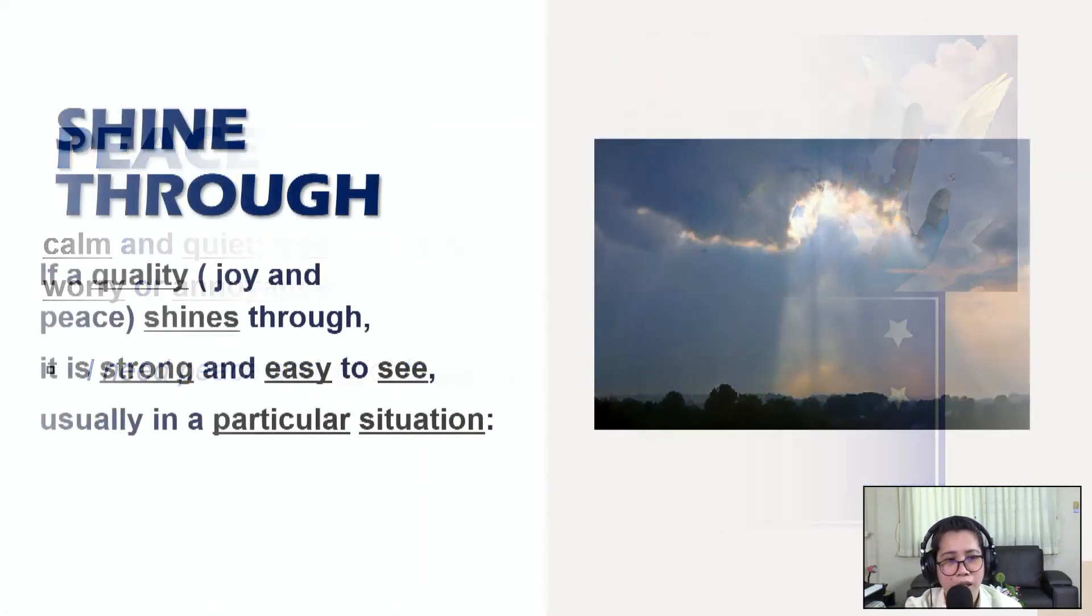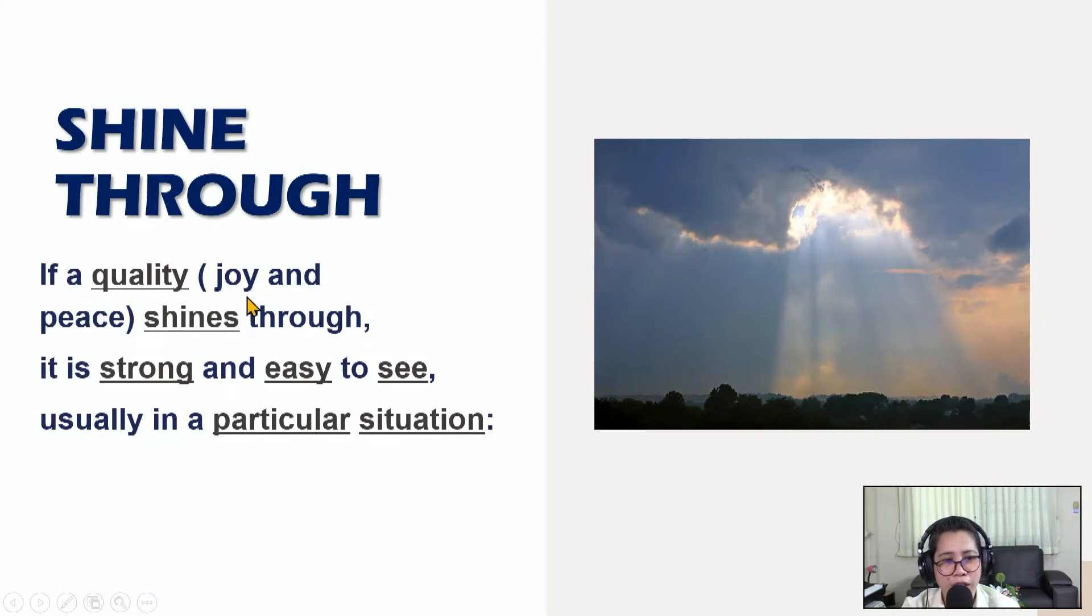Next we have shine through. If a quality like joy and peace shines through, it is strong and easy to see, usually in a particular situation. I put an example here like the sunlight is shining through the clouds. So in other words it could mean that if a quality like joy and peace shines through, it is very strong and easy to see. Usually in a particular situation. Like for example, if you are happy of course you are smiling and everybody will know that you are happy. But sometimes if you are sad you don't look happy at all, so people will say ah you are sad.